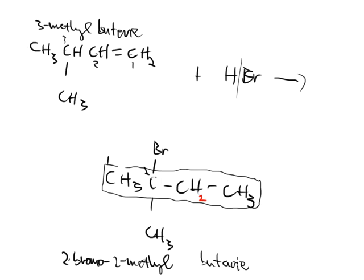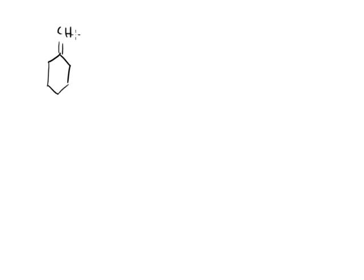All this stuff is coming together — that's why we covered the lecture material in the order we did. For part B, we have a ring with a double bond and a CH₂ group reacting with HBr. But I'm going to change it up — let's put HCl there instead. It happens the same way, no big deal. They're trying to trick us but we won't let them.